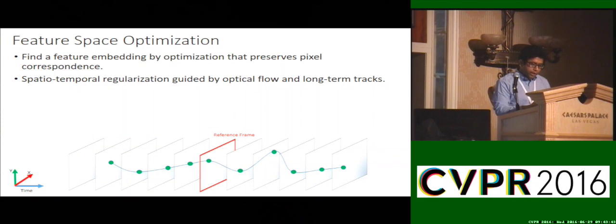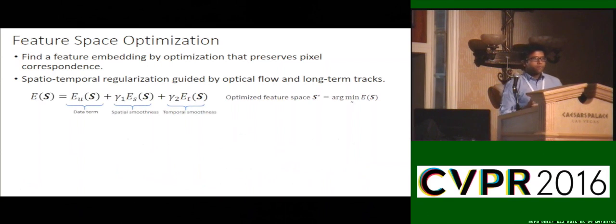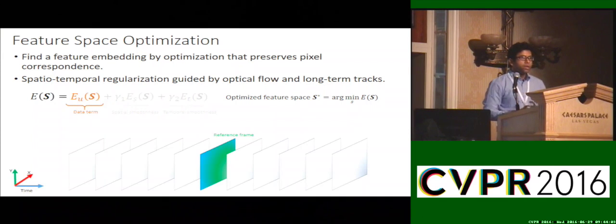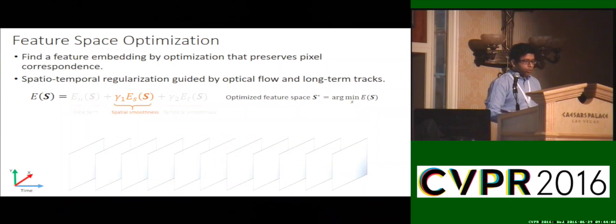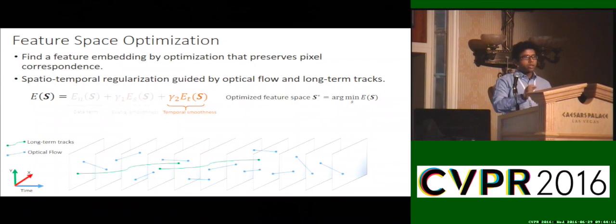To give you an illustration, over this track in the video, we want the features over all points to be the same or closer to the feature at the reference frame. The final feature space results from minimizing an energy objective which has a data term defined only over pixels on the reference frame, a spatial smoothness term using anisotropic second-order regularization, and a temporal regularization term which regularizes over correspondence information from optical flow and long-term tracks. As a result of this optimization, the feature space respects correspondence. Two features lying on the same correspondence will be much closer, which satisfies all three criteria we described before.